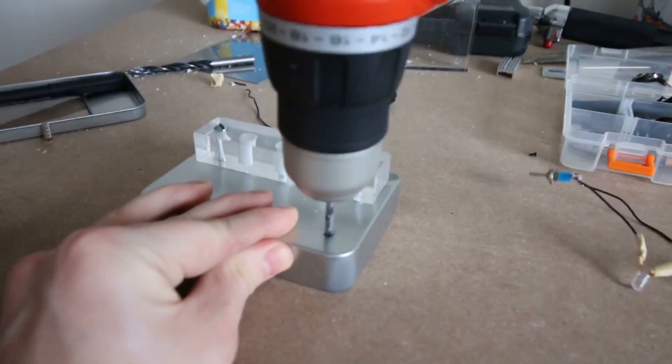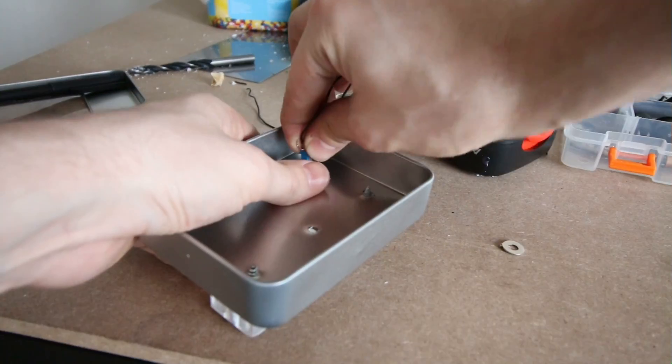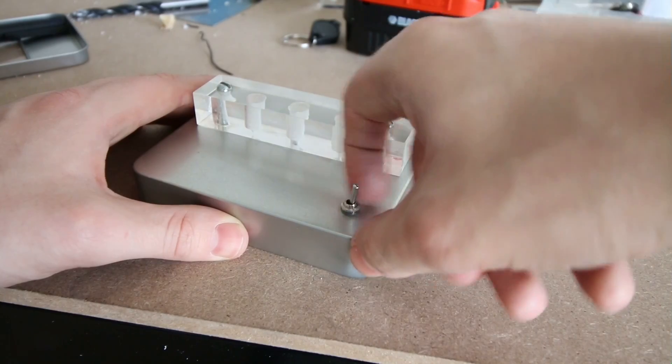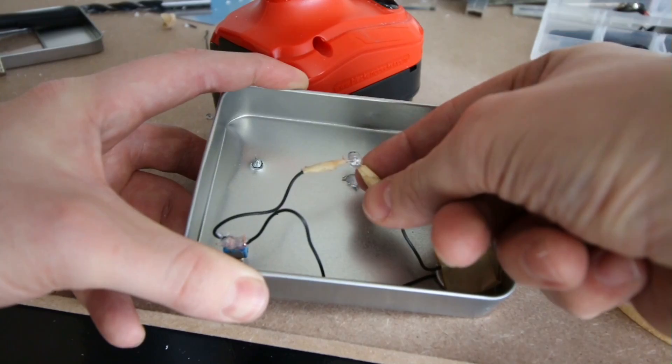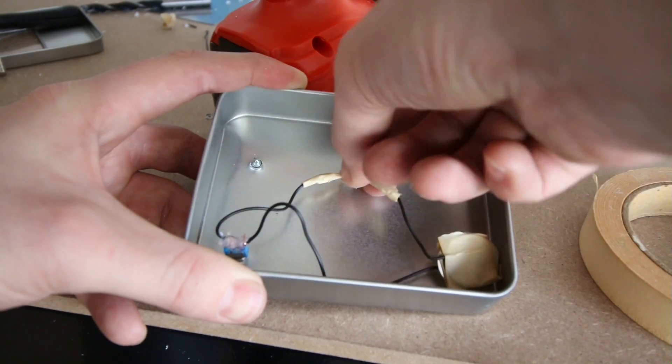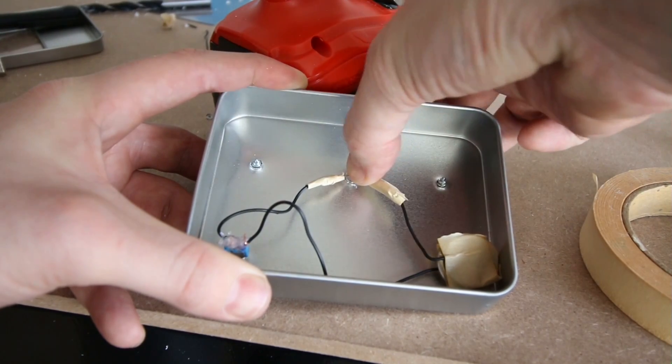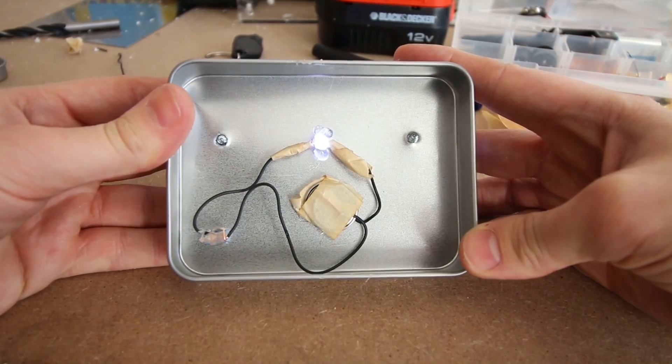I then drilled a hole to fit the switch on the edge. There we go. I then inserted the LED into that centre hole. I used a little hot glue to hold it in place.